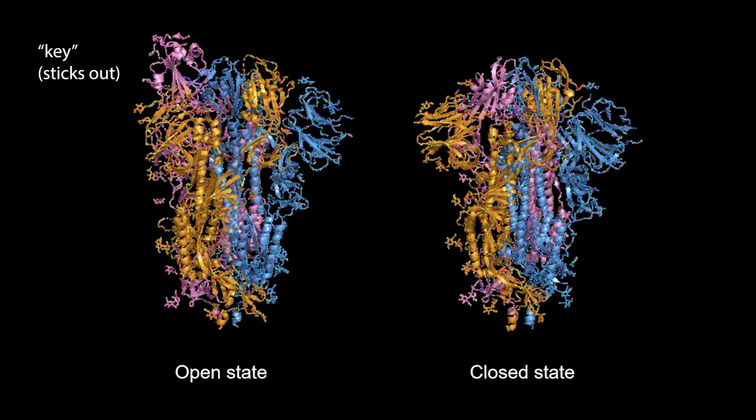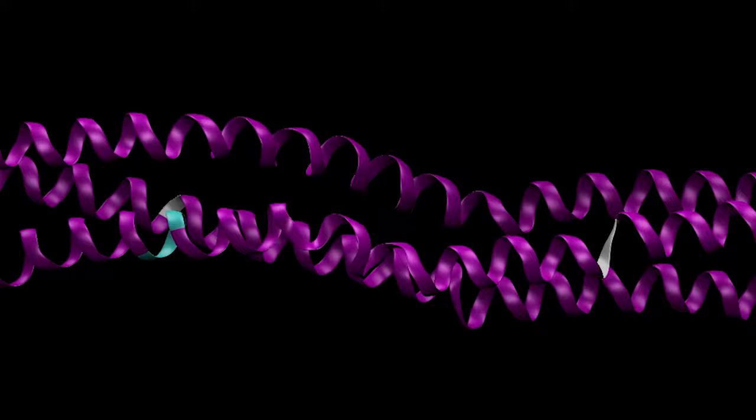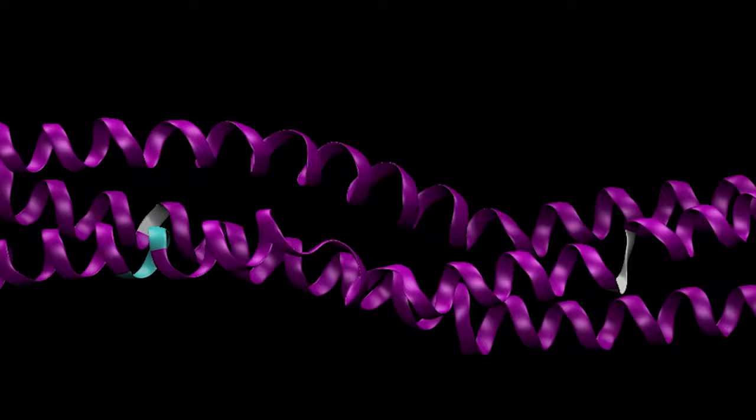Coronavirus spike proteins are continuously moving and they can adopt different shapes: a so-called receptor accessible state, referred to as the open state, and a receptor inaccessible state, referred to as the closed state. The open state is what provides the pathway for infection. Matter at the nanoscale is moving all the time because the kinetic energy stored in the molecules, reflecting what we call temperature at the macro level, is sufficient to deform the bonds between atoms — the chemistry — similar to the motion of a plucked string. The string isn't plucked by a finger, but by the internal energy of the virus, driven by the temperature. Higher temperature means more motion, and the other way around.